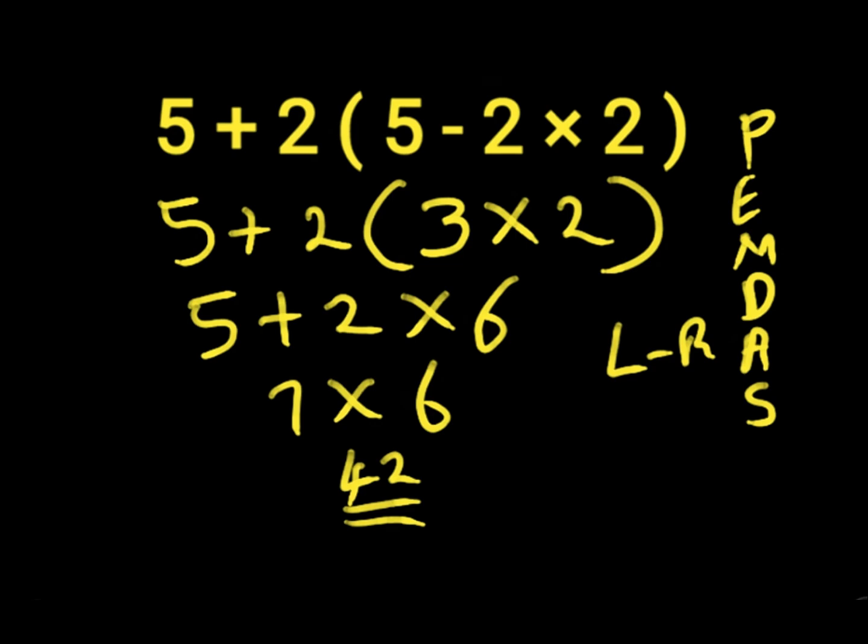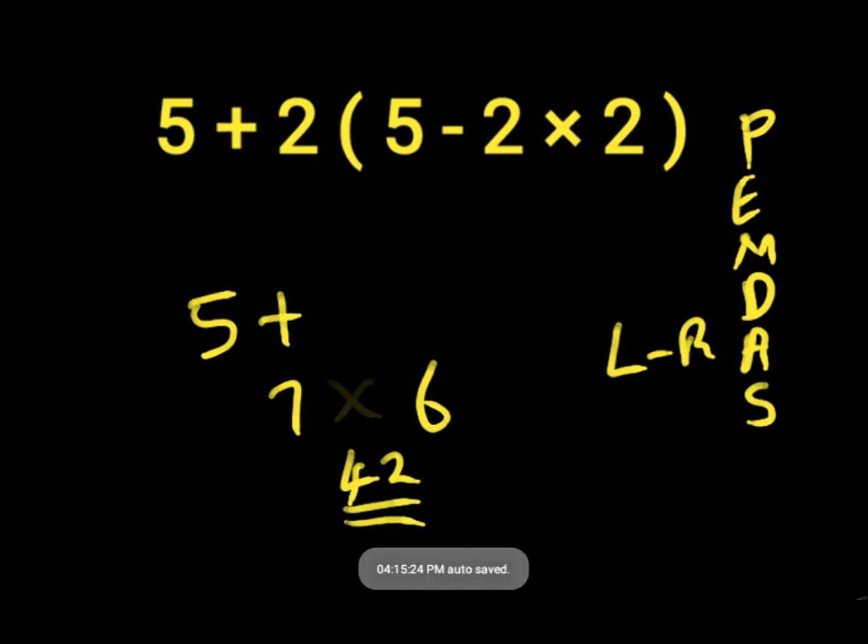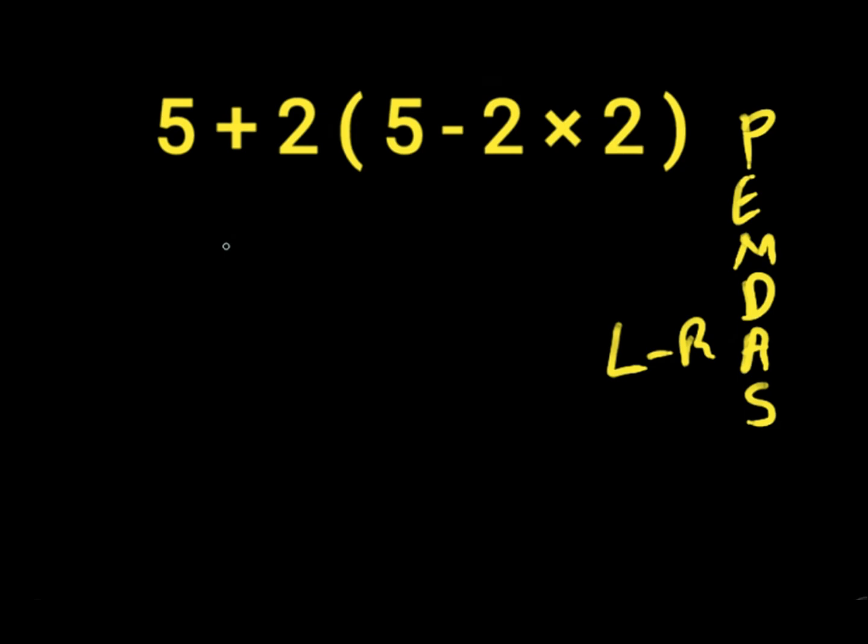To arrive at the correct answer, let's solve this expression properly. First, solve the parenthesis. Inside, we have subtraction and multiplication. We work with multiplication first because it comes before subtraction. So 2 times 2 gives us 4.